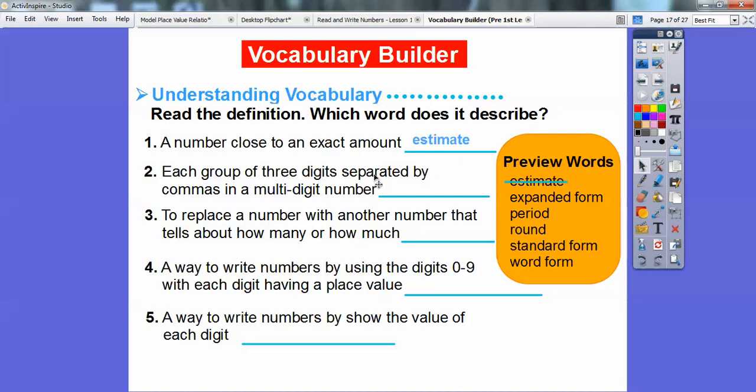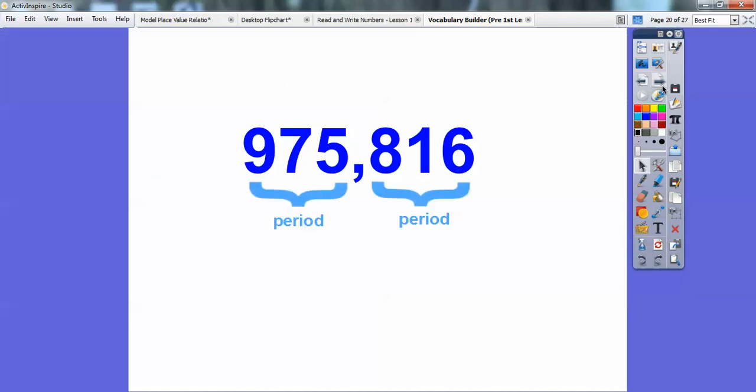Each group of 3 digits separated by a comma in a multi-digit number. Now you probably don't know this one. This one's called a period. Let's go back to this big old number. Those groups of 3 digits, this is called a period. This is the period of thousands. This period is the period in the ones. This is the ones, this is the tens, this is the hundreds. This all of a sudden becomes the thousands period: the thousands, the ten thousands, the hundred thousands. If I had a comma and three more numbers, it'd be the period of millions.